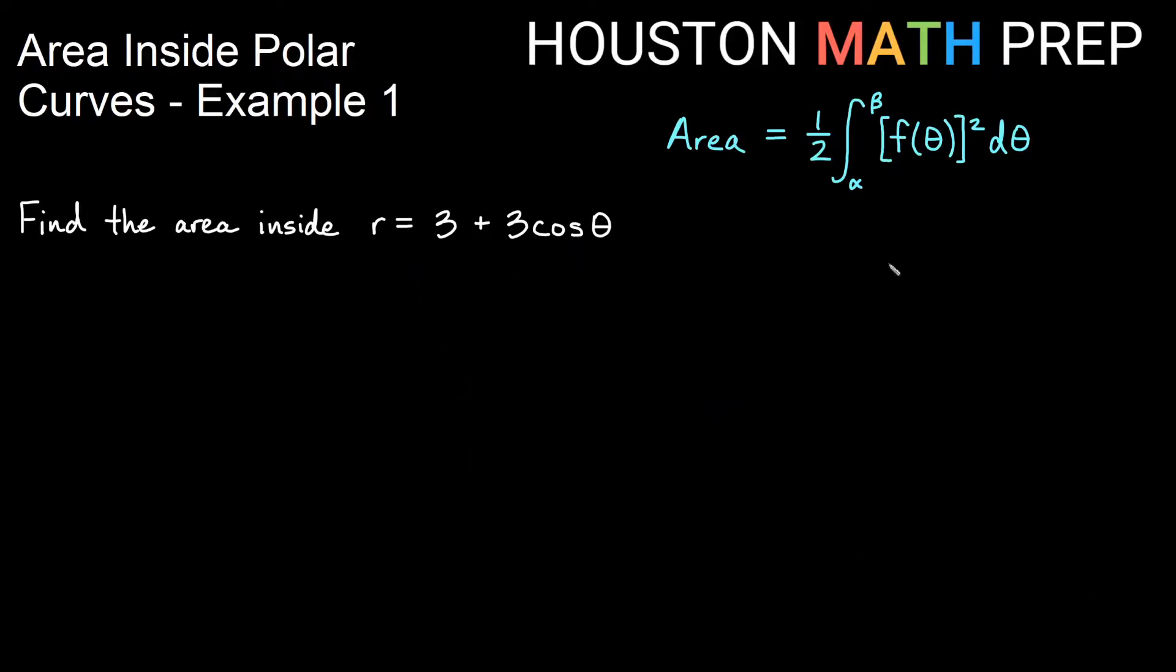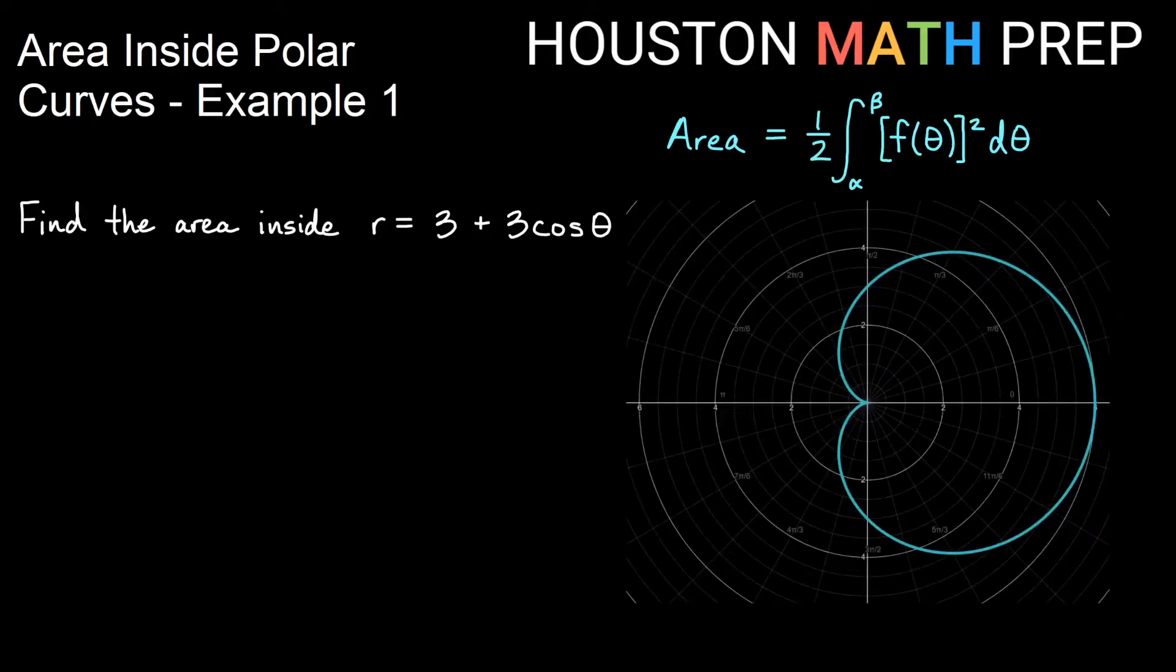I've got my area formula here, so here's our graph of this. It's a cardioid. It is symmetric along the x-axis here if you think of x and y.